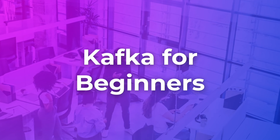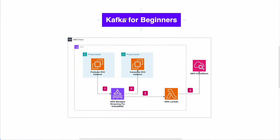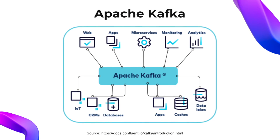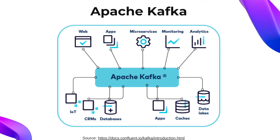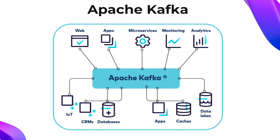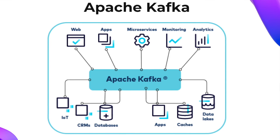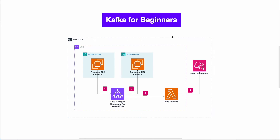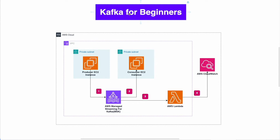Project number four is Kafka for beginners. Apache Kafka is a distributed event streaming platform used for building real-time data pipelines and streaming applications. It's used mainly in microservices — one side produces events and the other side consumes them, with Kafka acting as the broker. In this project we'll build a mini solution using AWS Managed Streaming for Kafka, or MSK.